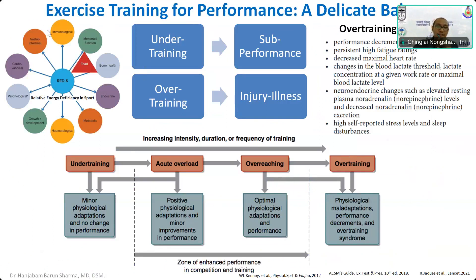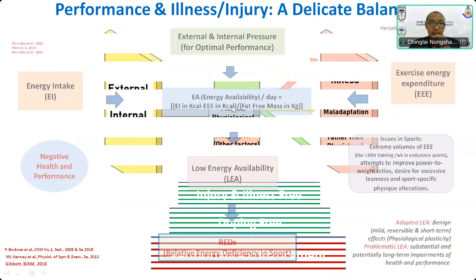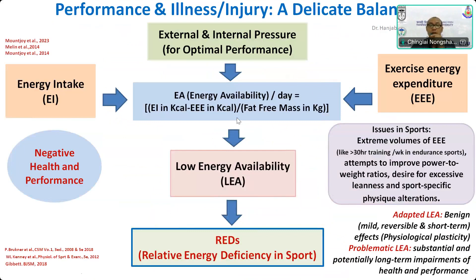Otherwise, overtraining syndrome will occur. Or if excessive training is associated with low energy availability, then relative energy deficiency in sports will occur, which is the topic of focus today. One has to understand that internal and external load are modified by different moderators so that the load can lead to injury or illness — pathological abnormalities or physiological maladaptation — or positive physiological adaptation, depending upon different moderators like fitness. Similarly, sports nutritional consideration is a key modifier, because internal and external pressure for optimum performance will directly or indirectly affect the balance between energy intake and exercise energy expenditure.